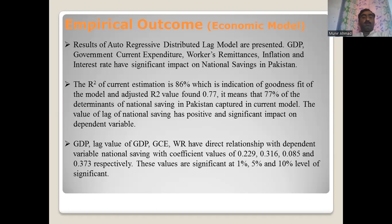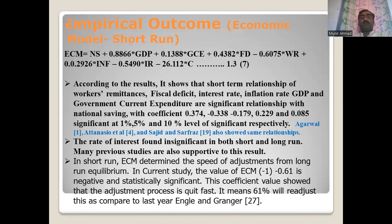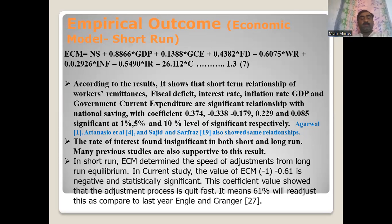This is the result of the economic model. In the long run, GDP, government current expenditure (GCE), and workers' remittances have a direct relationship with the dependent variable national savings, with values of 0.229, 0.316, 0.085, and 0.373, significant at 1% and 10% levels. The short-run economic model shows a significant short-run relationship for fiscal deficit, interest rate, inflation rate, and GDP. The ECM coefficient of negative 0.61 is statistically significant, indicating that 61% of disequilibrium is corrected per year.